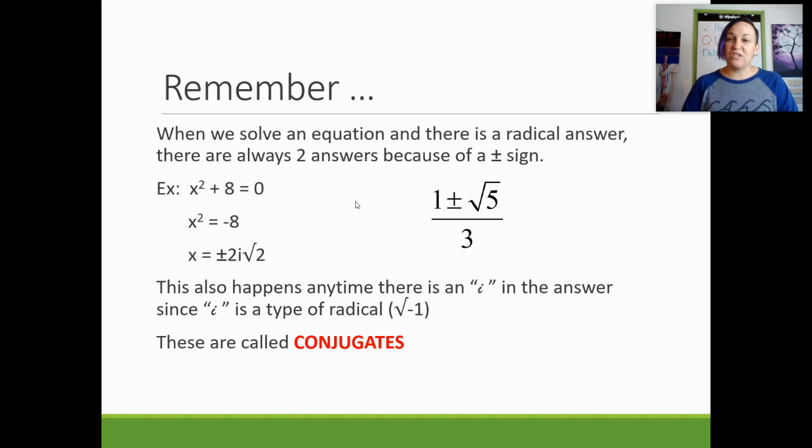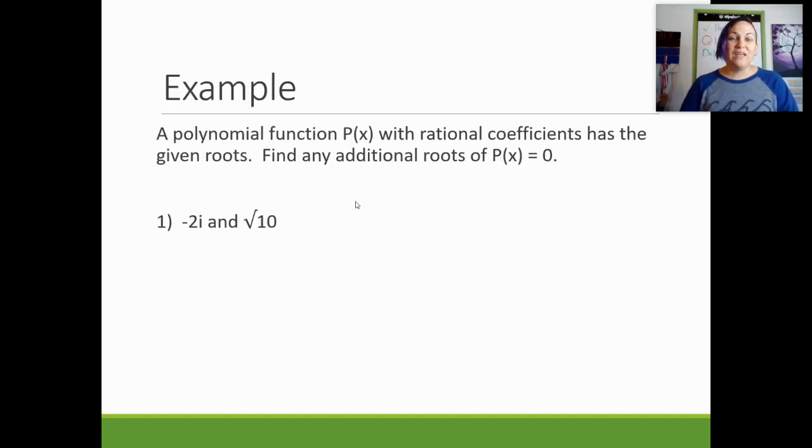To start this video, we're just going to practice writing down the conjugates. So in this problem, it says I have given you some of the roots to a problem and it wants to know what are the other roots to the problem. In our first example, they've given you the roots negative 2i and the square root of 10. So we just said that i's and rads always have to come in pairs. So if negative 2i is an answer, that means that positive 2i also has to be an answer. And if positive rad 10 is an answer, that means that negative rad 10 also has to be an answer. That's mandatory. Always happens.